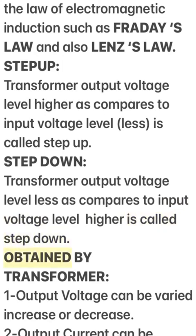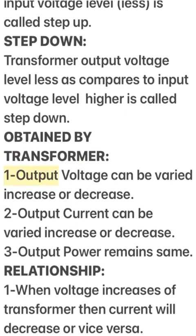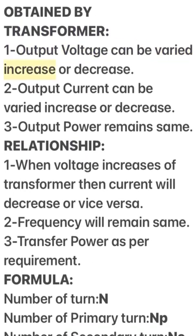What is obtained from a transformer: (1) Output voltage can be varied — increased or decreased. (2) Output current can be varied — increased or decreased. (3) Output power remains the same. Relationships: (1) When voltage increases in a transformer, current will decrease, and vice versa. (2) Frequency remains the same. (3) Power is transferred per requirement.